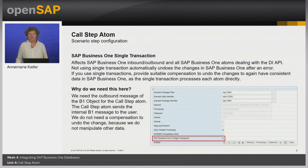Why do we need this here? We need the outbound message of the B1 object for the call step atom. The call step atom sends the internal B1 message to the user. We do not need a compensation to undo the change because we do not manipulate any other data. We will do the same for the second scenario step — set it to single transaction.